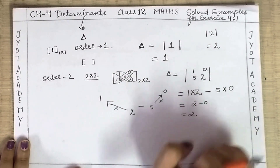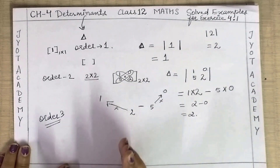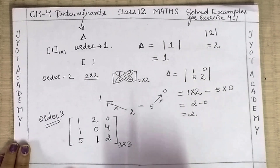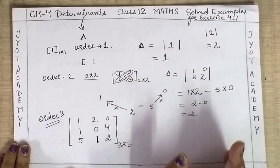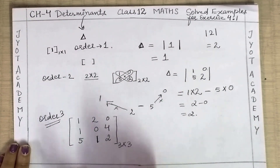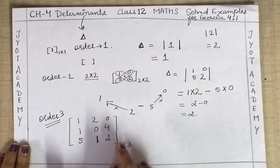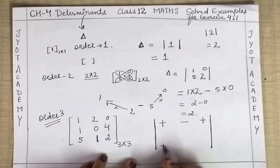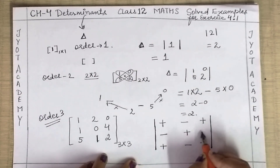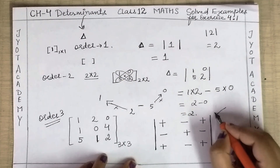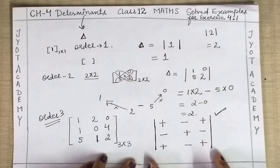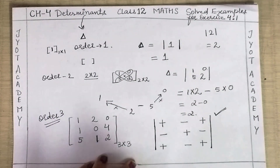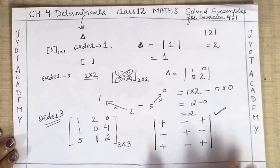Now let's see how to find the determinant of an order 3 matrix. First of all, you need to know the sign chart. For a 3×3 matrix, the sign chart is: first row — plus, minus, plus; second row — minus, plus, minus; third row — plus, minus, plus. It is very important to remember this sign chart for order 3 matrices. If you do not remember it, your answers will always be wrong.